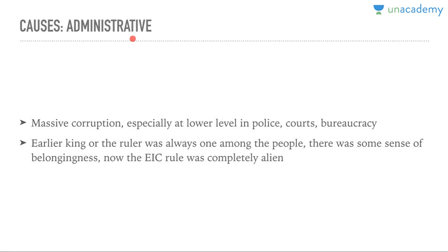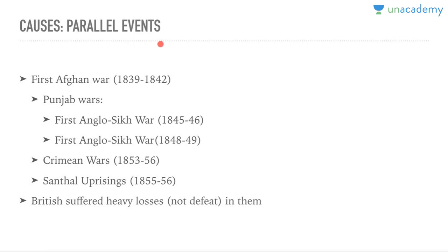Now the administrative causes. There was massive corruption, especially at the lower level — in police, courts, and bureaucracy — persisting in some form or other. Very importantly, earlier the ruler gave you a feeling of belonging — he was from your own land. But now it was a completely alien ruler governing from thousands of miles away, which was the first time in India's history. Earlier rulers came from outside but settled in India; now there was no sense of belongingness.